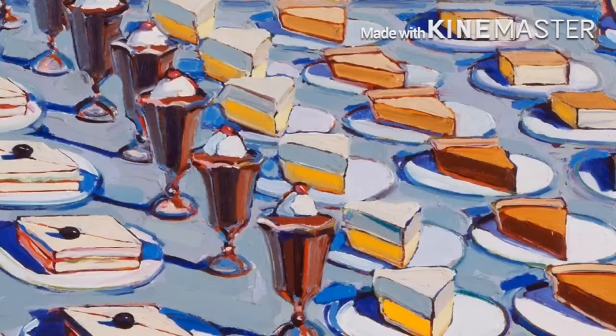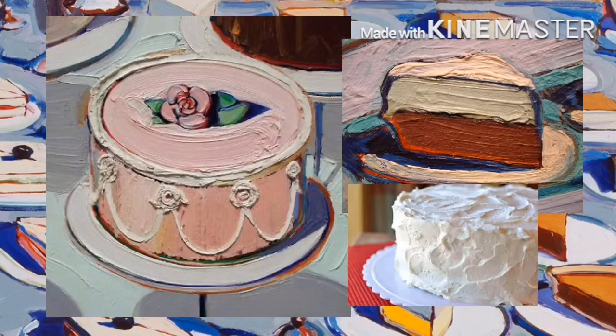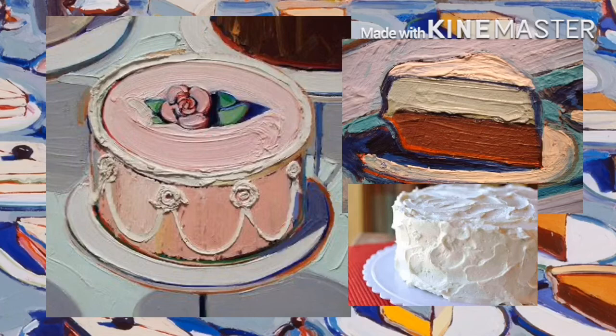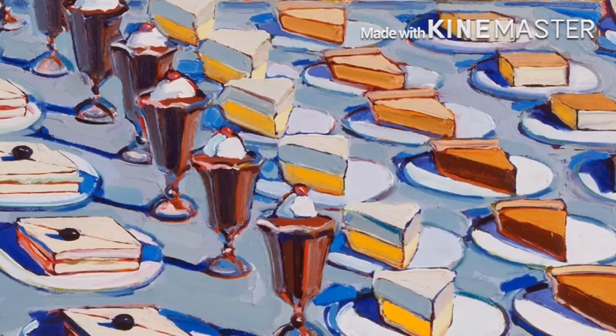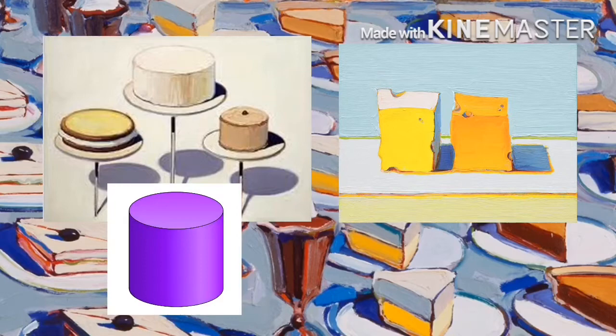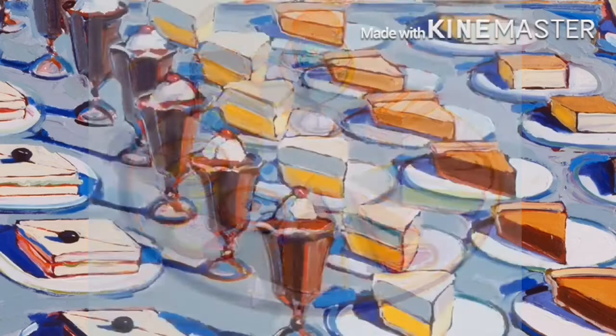Now let's take a look at some of Wayne Thiebaud's artwork. His choice of paint helps him capture the texture of sweet treats. Oil paint takes a long time to dry, but he used it to create really thick layers that look like icing dripping out of the canvas. He also makes his sweet treats look three-dimensional on a flat surface by using shapes like cylinders and cubes. He adds shadows and highlights to create the impression of light shining on a solid object. In this video, we're going to copy his style from when he painted gumball machines.